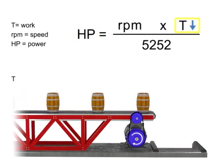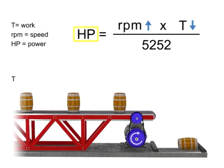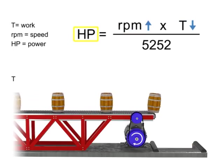If the torque decreases, the speed of the conveyor increases and the horsepower generated by the motor remains constant.